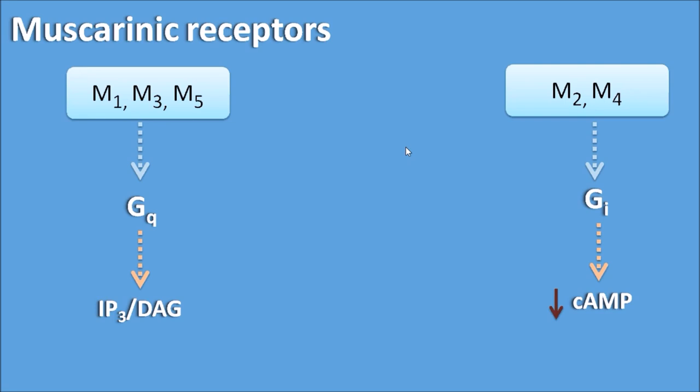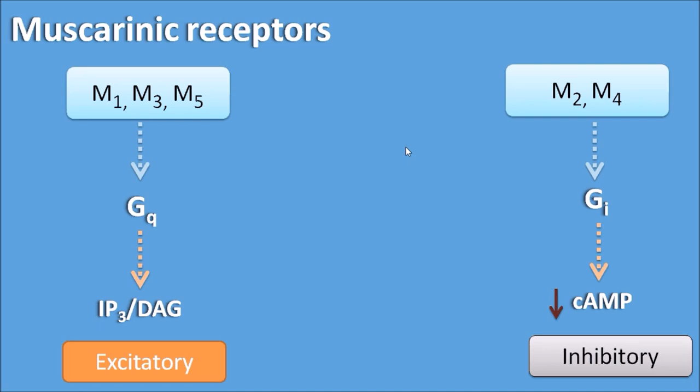Whenever the inositol trisphosphate or diacylglycerol system is involved, they always produce excitation. So M1, M3, and M5 receptors are excitatory in nature — if it is a neuron it is excited, if it is a gland it secretes, and if it is a muscle it contracts. Similarly, a decrease in cyclic AMP causes inhibition of cardiac muscle or neurons. So odd-numbered muscarinic receptors are excitatory and even-numbered muscarinic receptors are inhibitory in nature.